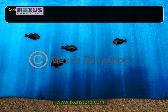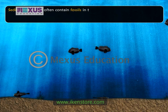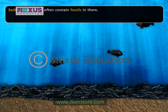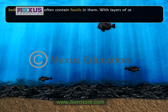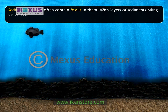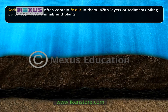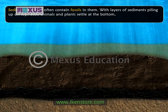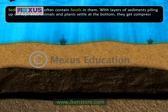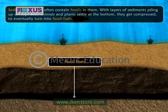Sedimentary rocks often contain fossils in them. With layers of sediments piling up on top, dead animals and plants settle at the bottom. They get compressed to eventually turn into fossil fuels.